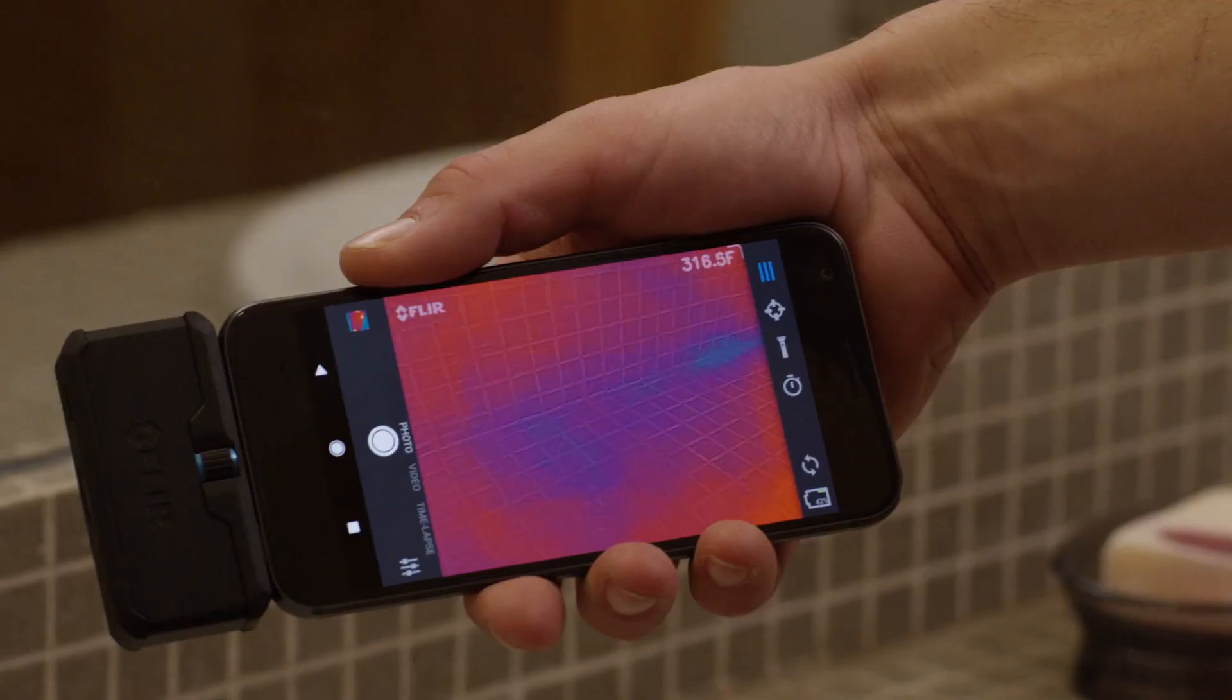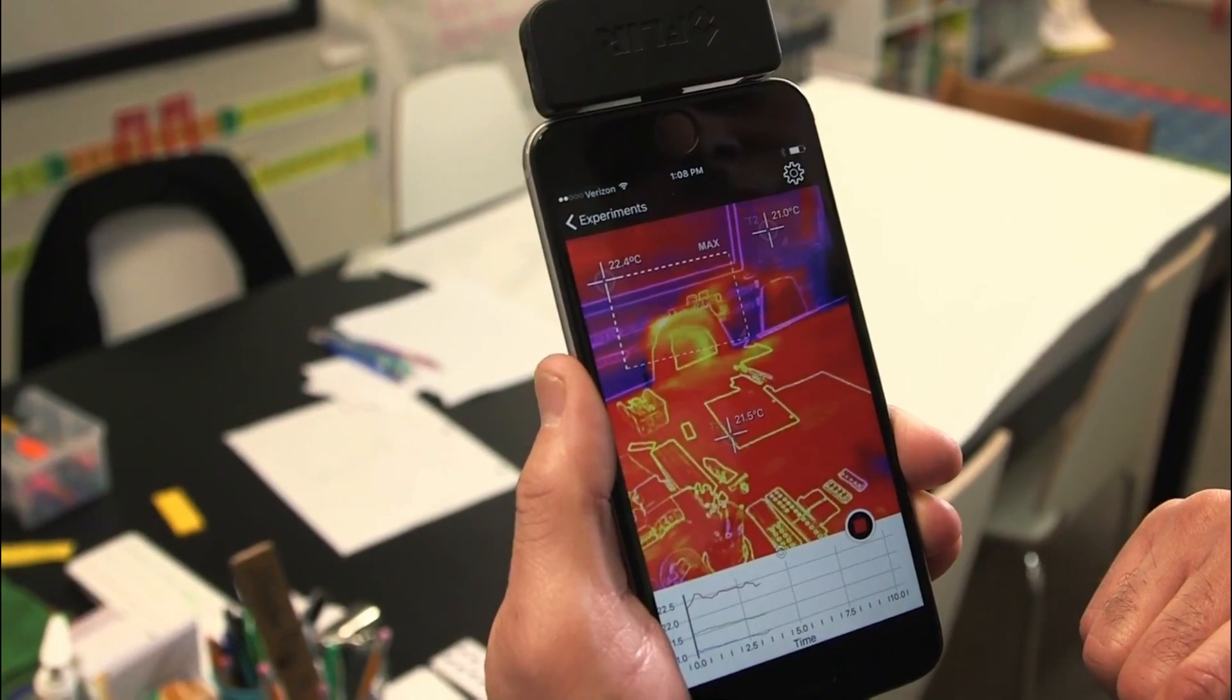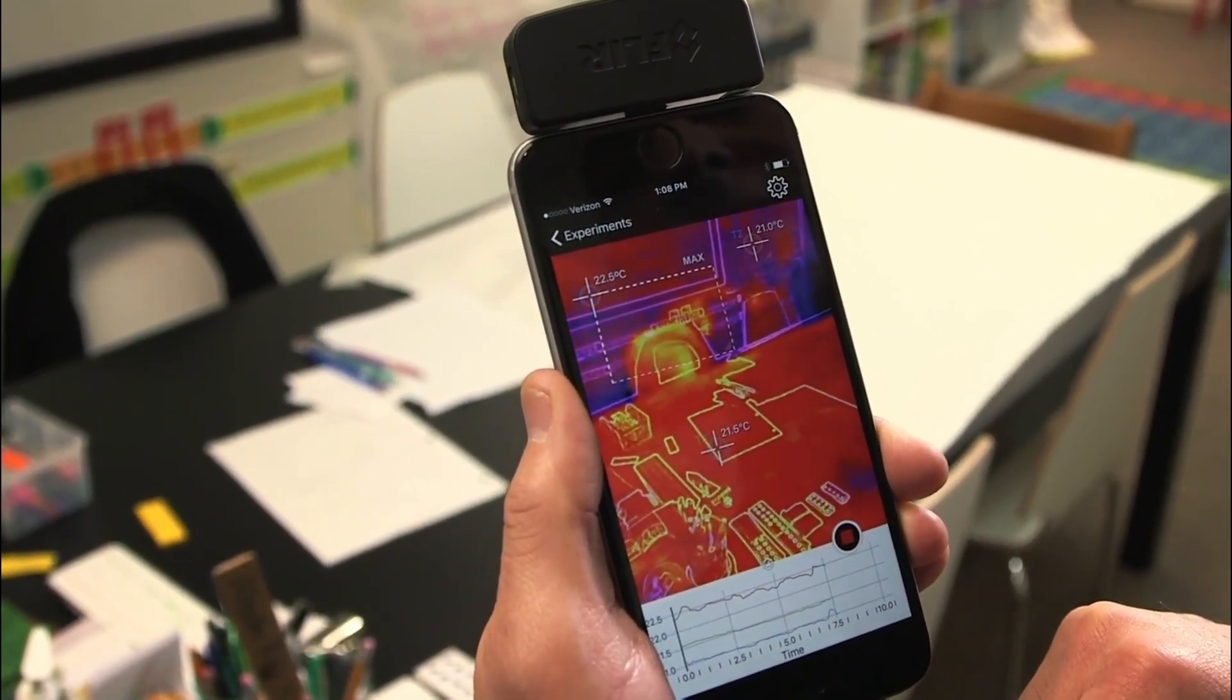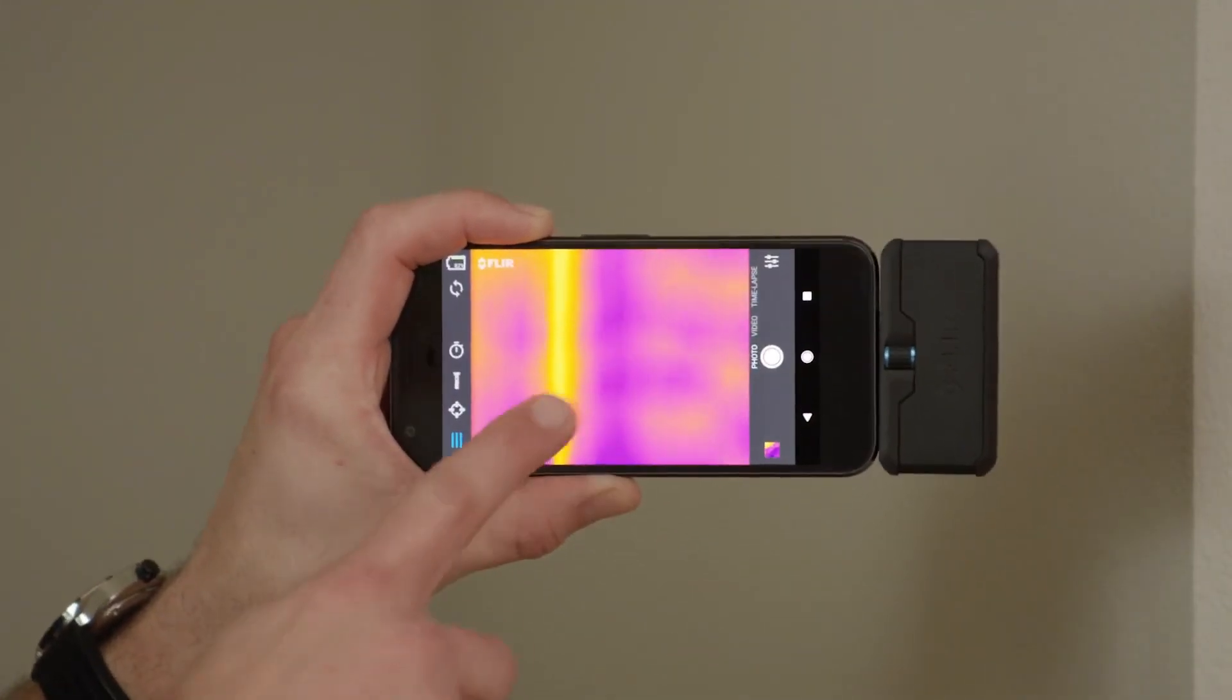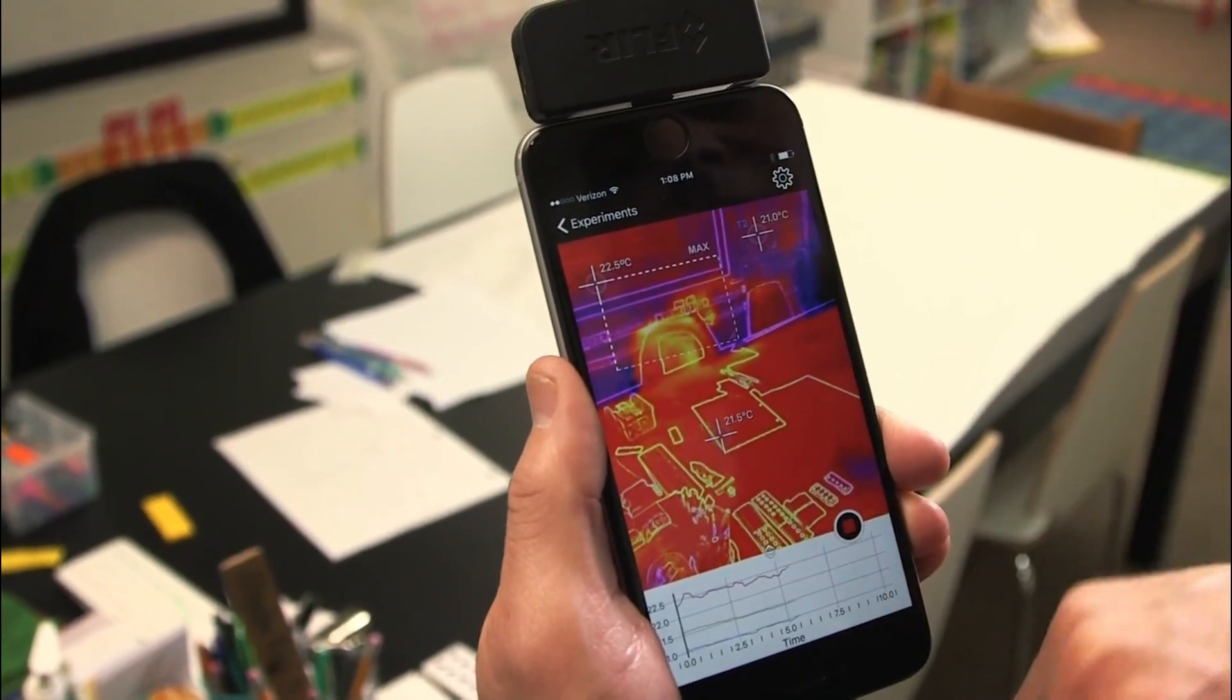If you use a thermal camera for home inspection, you can detect things that you might miss with the naked eye, like sources of moisture, heat loss, energy loss, potential roof leaks, poor insulation, inadequate ventilation, or even mice and pests. That's why we researched the best thermal cameras that have high image resolution and are good value for money.